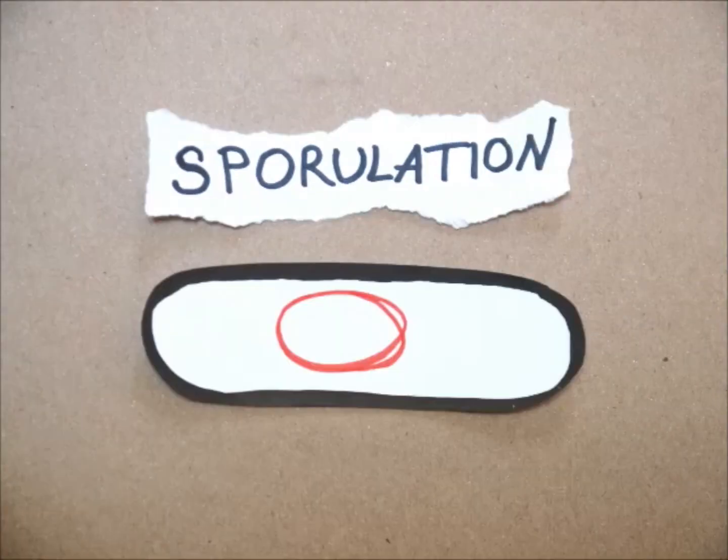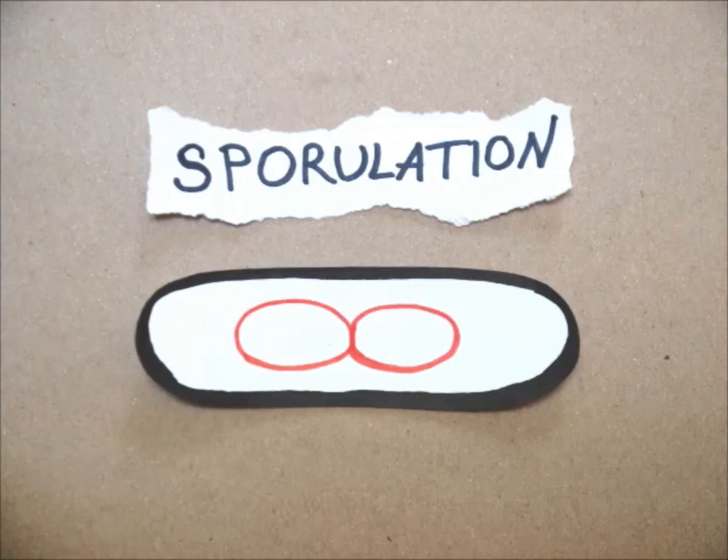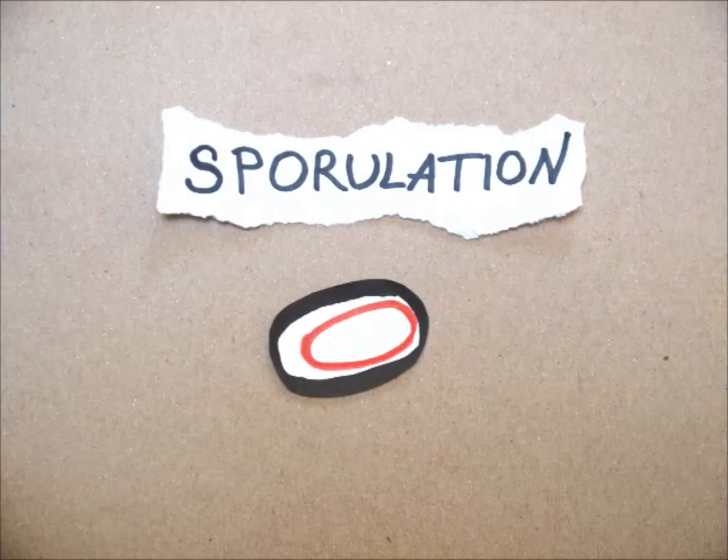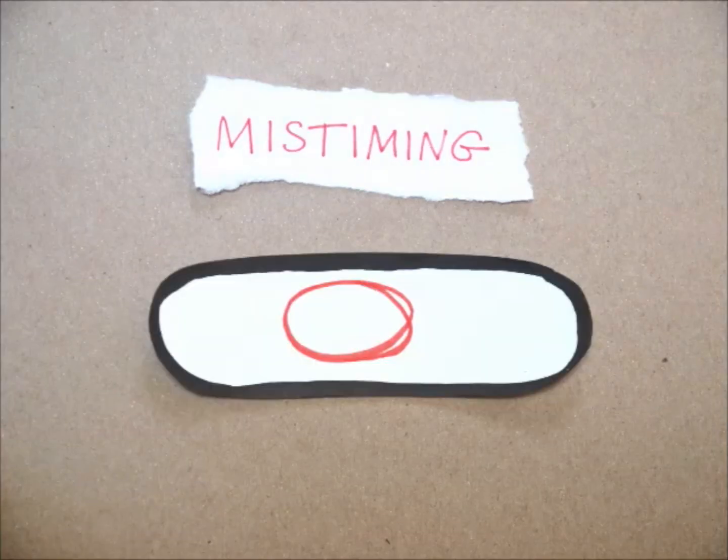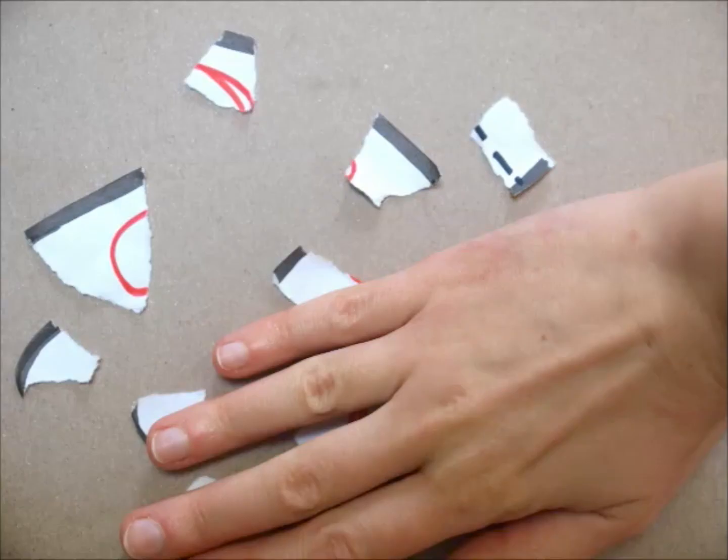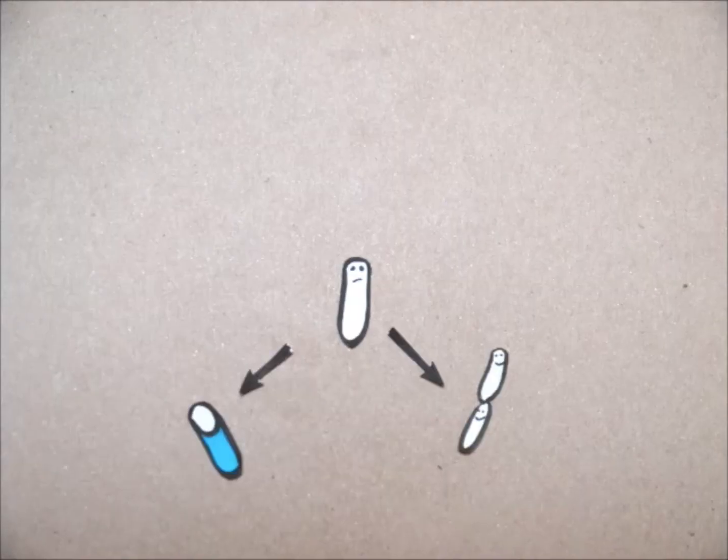Starving Bacillus cells stop normal growth and divide asymmetrically. The smaller compartment becomes a spore. Both compartments still need their own DNA copy. If a cell starts sporulation before completing DNA replication, it fails. But how are these processes coordinated?